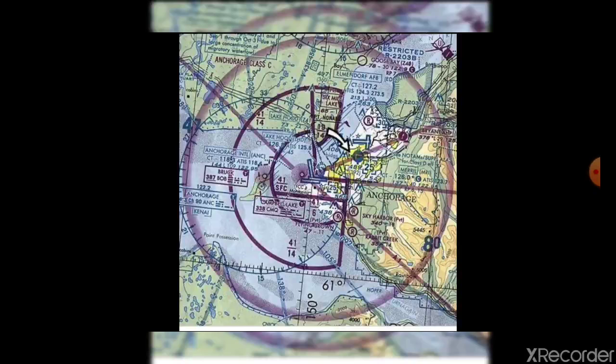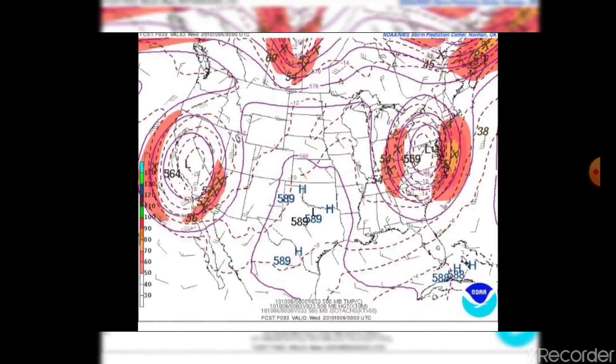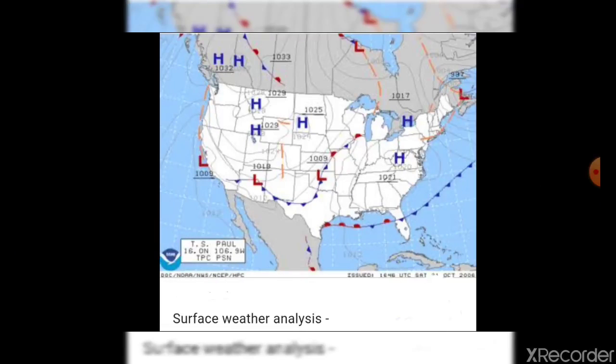There are various types of weather maps available: this is an aviation map, this is a constant pressure chart map, and this is a surface weather analysis map.